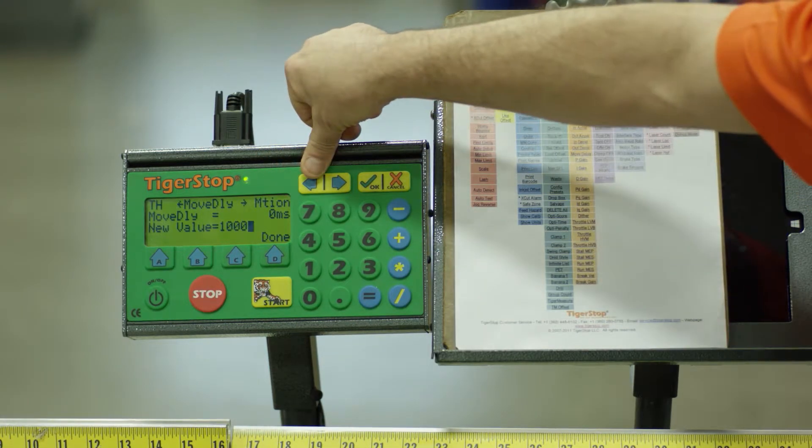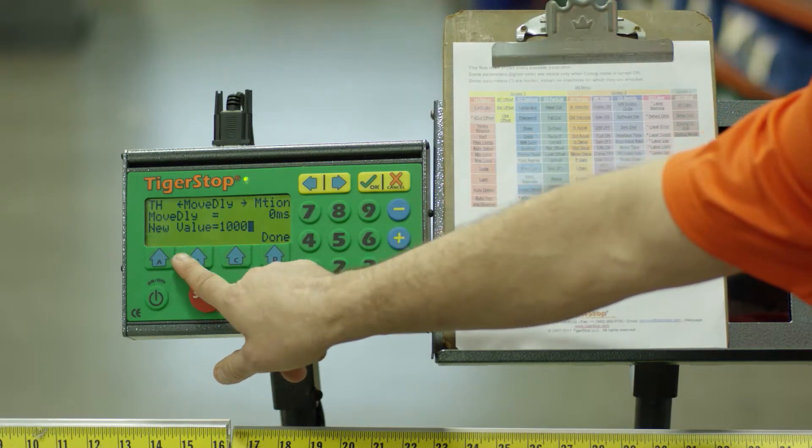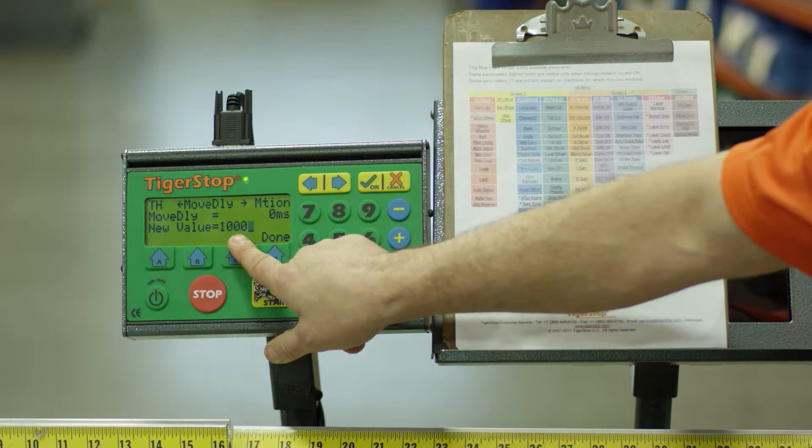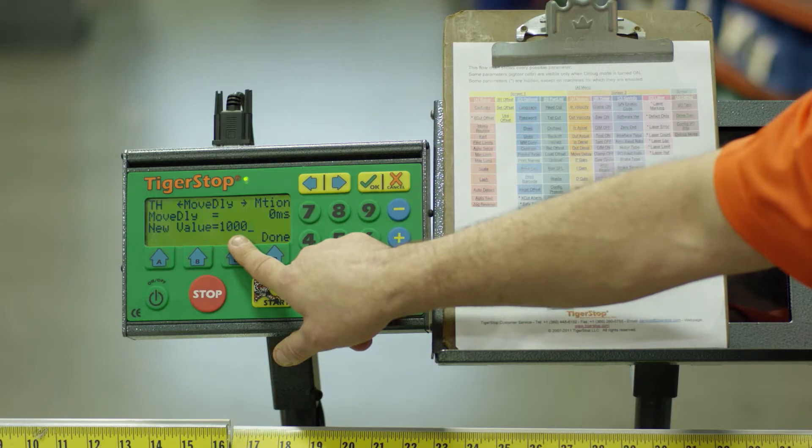The top line shows me what the present setting is. The next line shows me what the new value is going to be. Entering 1000 is 1000 milliseconds, or one second.